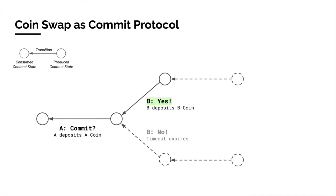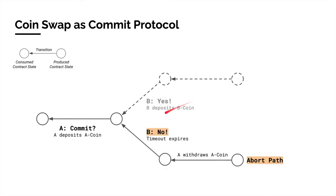After Alice commits her coin, Bob can decide to participate and deposit his bitcoin, leading to a state where both actors can withdraw the funds deposited by the counterparty, thereby completing the swap. If Bob decides not to cooperate, a timeout will eventually expire, allowing Alice to withdraw her initial A-coin deposit. This is the abort path. Notice that both the success and abort paths are safe — either the swap completes in total, or not at all.